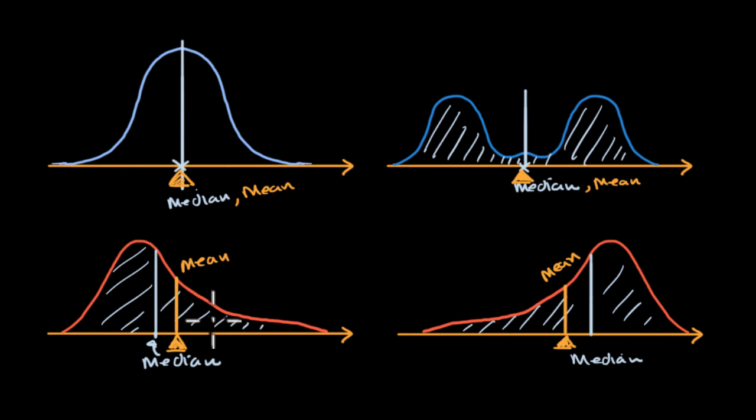Distributions like this are referred to as being skewed. This distribution, where you have the mean to the right of the median, where you have this long tail to the right, this is called right skewed.